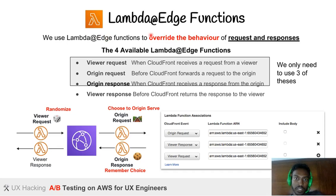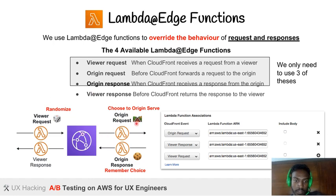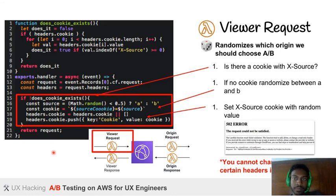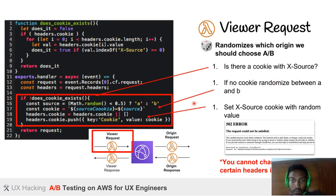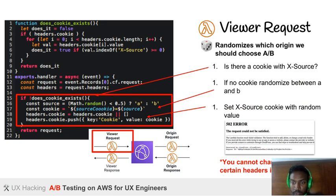Lambda@Edge functions let us override the behavior of requests and responses. There are four available Lambda@Edge functions; we use three: viewer request, origin request, and origin response. The viewer request handles what happens when the user requests the website — this Lambda function randomizes which origin to choose. It checks whether there's a cookie with an X-Source value; if there's no cookie, it randomizes between A or B and sets the X-Source cookie. Note: you cannot change the origin or certain headers in the viewer request, or you'd get a 502 error — which we encountered and fixed.